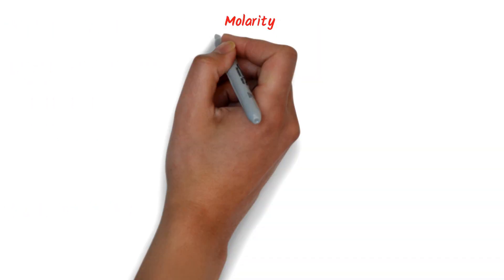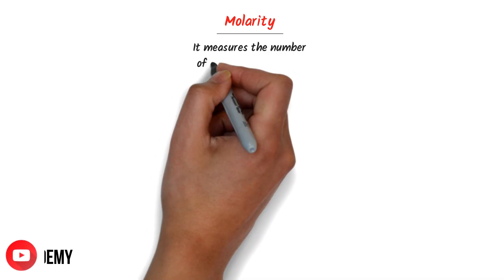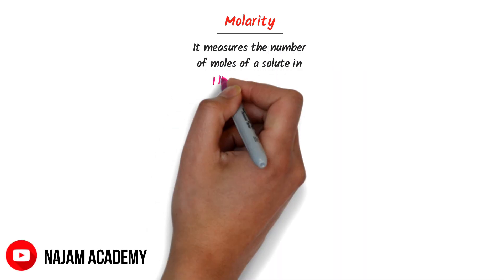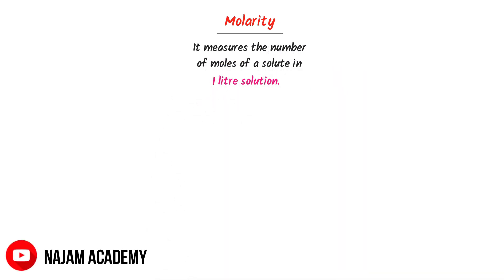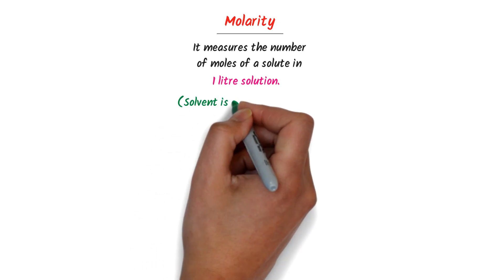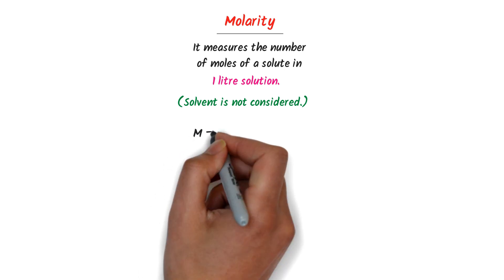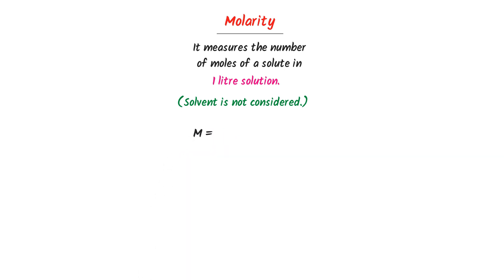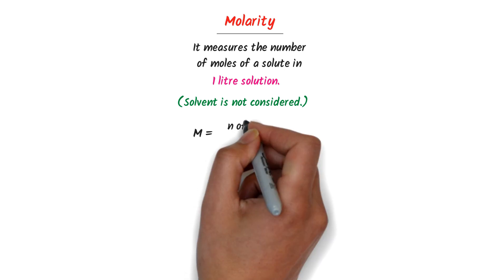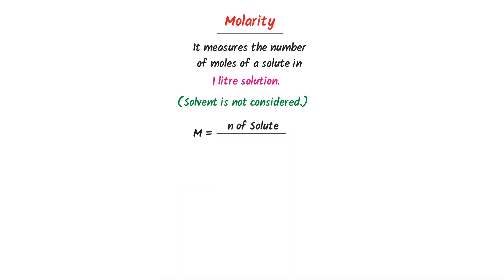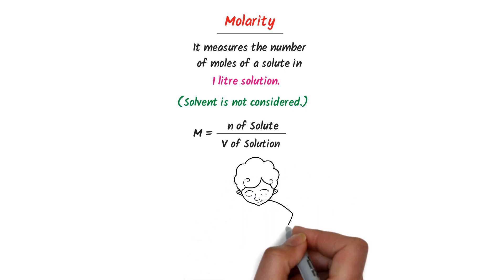What is molarity and molality? Well, molarity measures the number of moles of solute dissolved in 1 liter of solution. Remember that the solvent is not considered in molarity. Molarity is denoted by capital M, and its formula is equal to number of moles of solute divided by volume of solution.